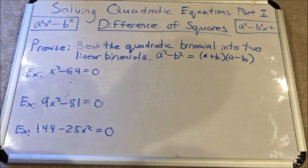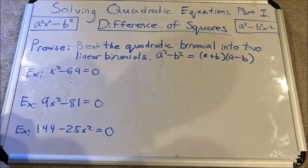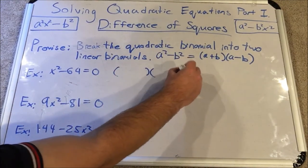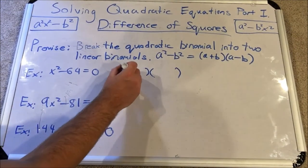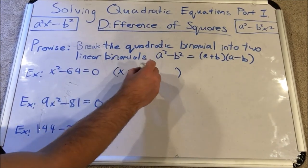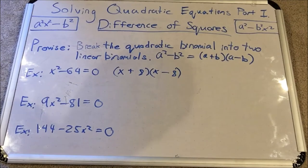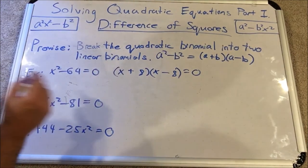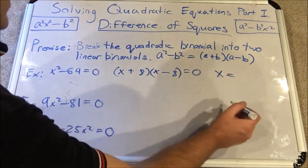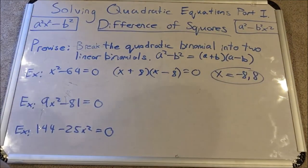Applying that to our first example: x squared minus 64 equals zero. Both terms are perfect squares with a minus sign between them, so we set up two parentheses. First parenthesis: square root of x squared is x, plus square root of 64 which is 8. Second parenthesis: x minus 8. Setting each factor equal to zero using the zero product property gives x equals negative 8 and x equals positive 8.